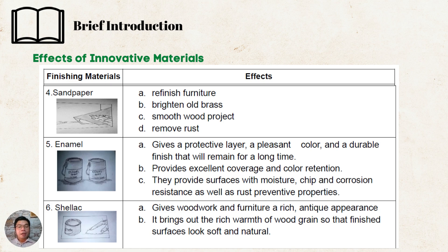We have here enamel. It gives a protective layer, a pleasant color, and a durable finish that will remain for a long time. It also provides excellent coverage and color retention. The last effect is it provides surfaces with moisture, chip, and corrosion resistance, as well as rust preventive properties — it really strengthens the product. Number six is shellac. It gives woodwork and furniture a rich, antique appearance, and it brings out the rich warmth of wood grain so that finished surfaces look soft and natural.